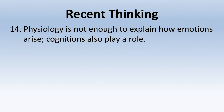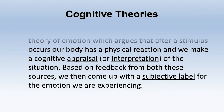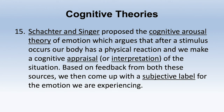Physiology alone is not enough to explain how emotions arise — cognitions do play a role, specifically in terms of appraisals. Schachter and Singer proposed the cognitive arousal theory of emotion, which argues that after a stimulus occurs, our body has a physical reaction and we make a cognitive appraisal of the situation; based on feedback from both sources, we come up with a subjective label for the emotion. For example, if two people are both cut off while driving, one might appraise it as 'that guy is a jerk' and get angry, while another appraises it as 'he must be in a hurry' and feels sympathetic.